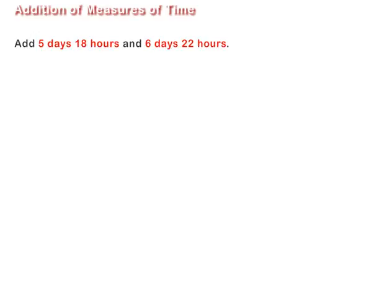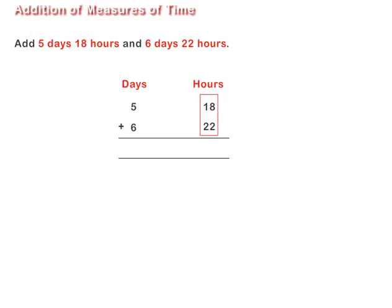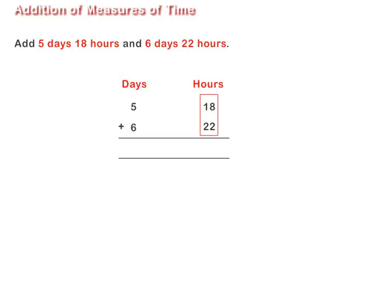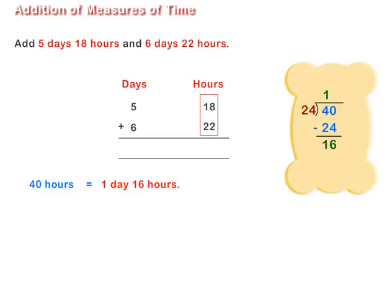Now, let us add 5 days 18 hours and 6 days 22 hours. Arrange 5 days 18 hours and 6 days 22 hours in columns as shown on screen. Add 18 hours and 22 hours, that is, 40 hours. Convert 40 hours into days and hours, which is equal to 1 day 16 hours.